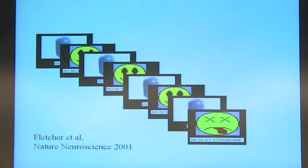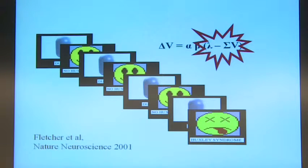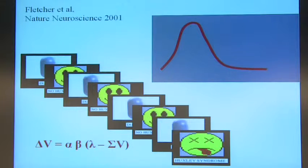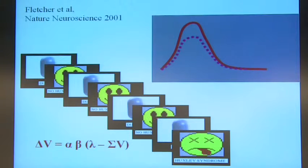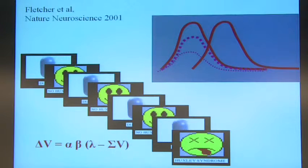At that point we could then violate the expectation. This brings us into the Rescorla-Wagner model, because we can plot on a trial-by-trial basis the change in prediction error. In the early trials we should get a bigger response in prediction error-dependent areas because there is no strong prediction and therefore anything is a surprise. But as we go from trial to trial, that activation should plummet until we re-evoke it through violation of expectations. So we're simply looking for areas that do this — rise then fall, then rise again.